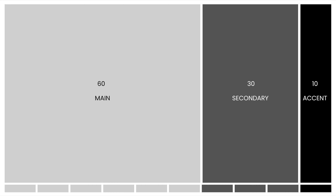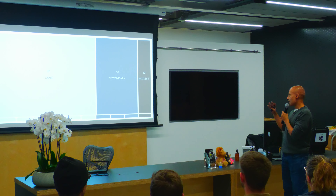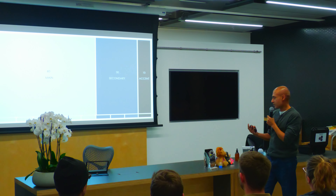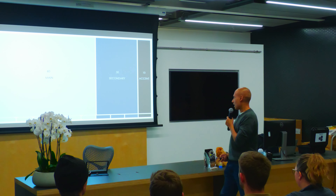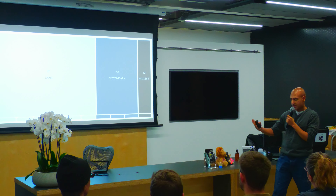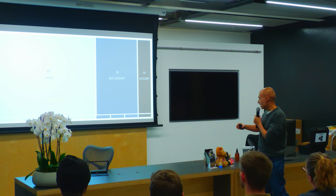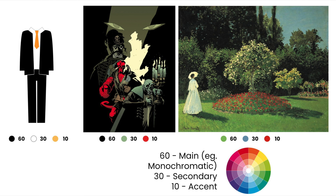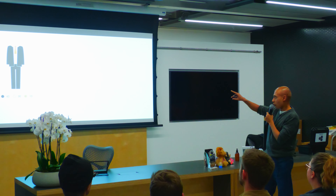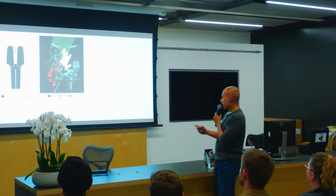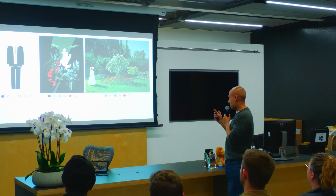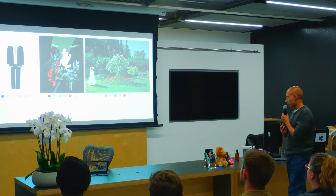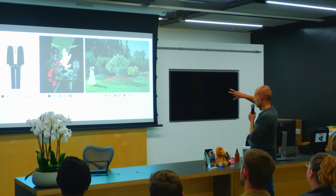So the 60-30-10 rule says you pick three main colors. You don't have to use those colors exactly — you can use different values or shades. But you basically have one color that takes up 60% of the screen, another that takes up 30%, and another that takes up 10%. For example, when dressing in a suit the eye is drawn to the tie. In a comic example, the eye is drawn to the Hellboy character which is red, and in a Monet painting you can see the red is really drawing the eye.